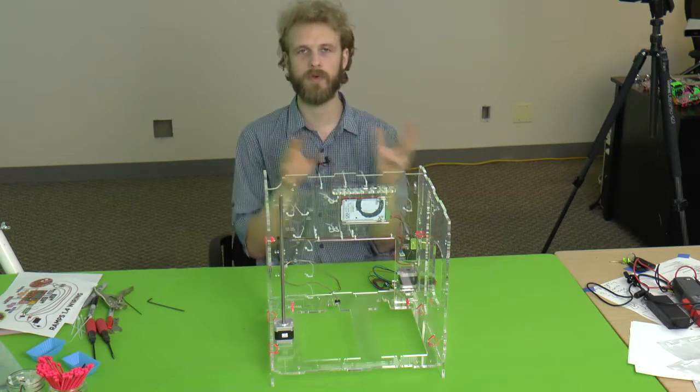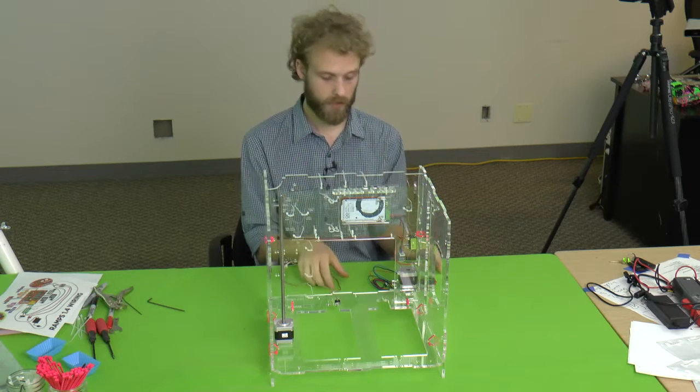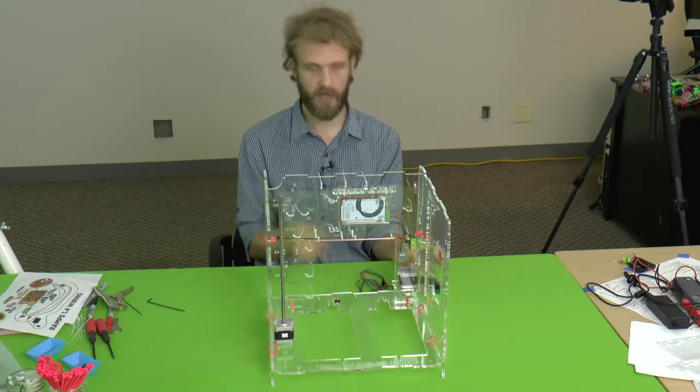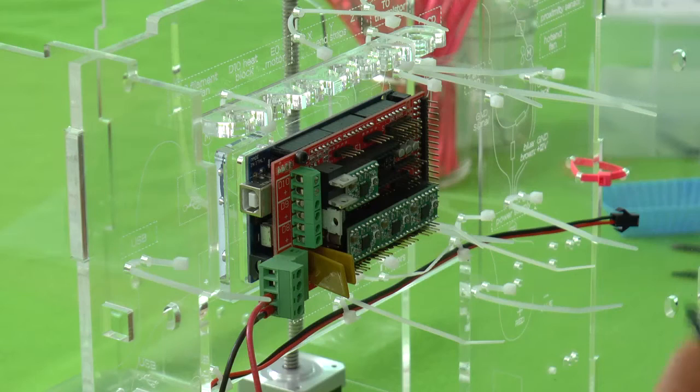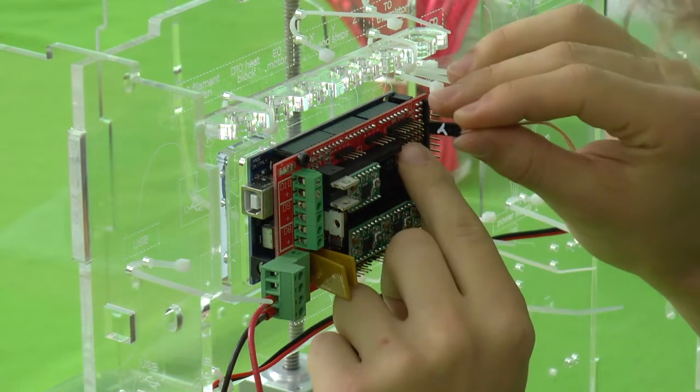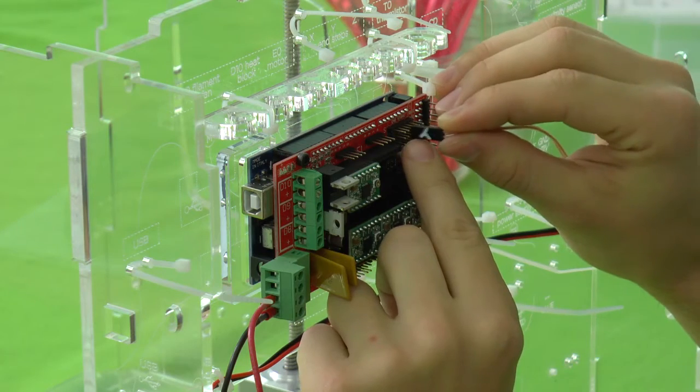Now that we have the Y motor, Z motor, and Y end stop in place, we can wire them up to the Arduino. You're going to need the Z motor wire, the Y motor wire, and the Y end stop wire. Let's start with the end stop. It goes right up here.